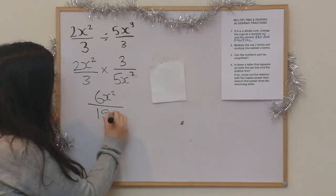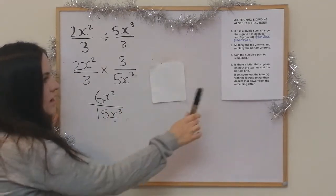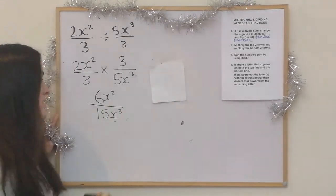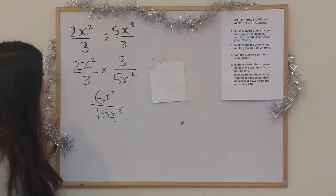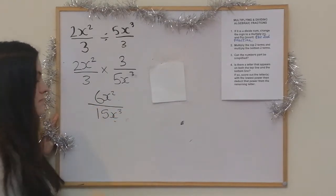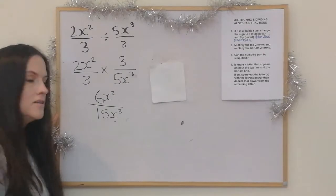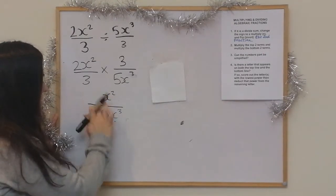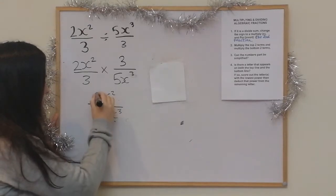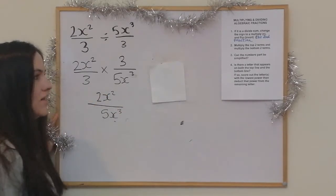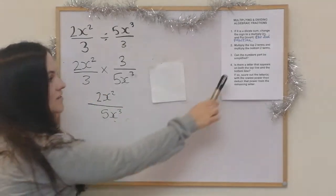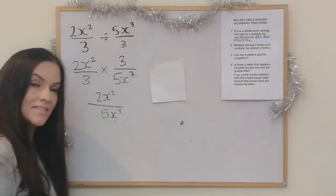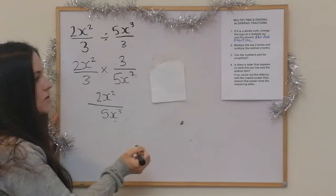The next step says: can the numbers part be simplified? If I look at it like a 6 over 15 fraction, both of those can be divided by 3. So the top becomes 2 and the bottom becomes 5. Then it asks: is there a letter that appears on both the top line and the bottom line? Well there is, because x is on the top and x is on the bottom.